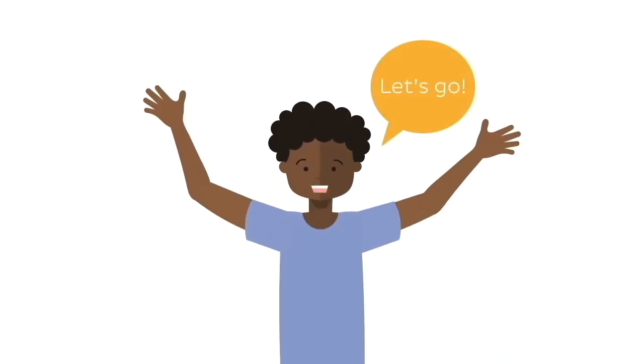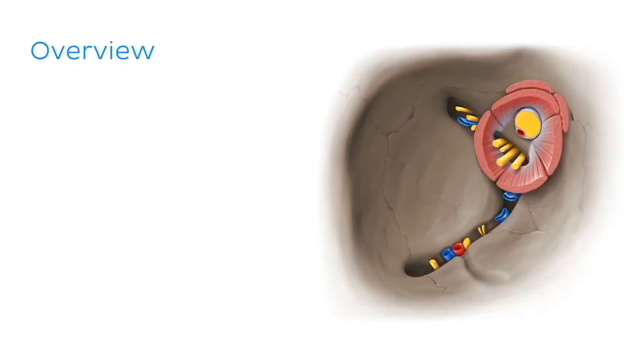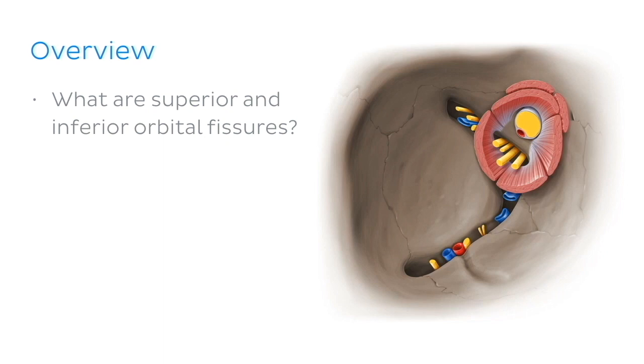Before we get into the good stuff, here's a quick overview of what we'll look at today. We'll start by defining the superior and inferior orbital fissures. Then we'll quickly review the bones of the orbit.